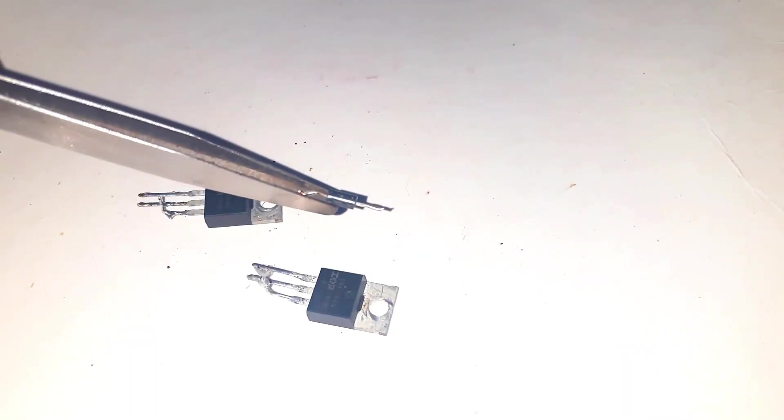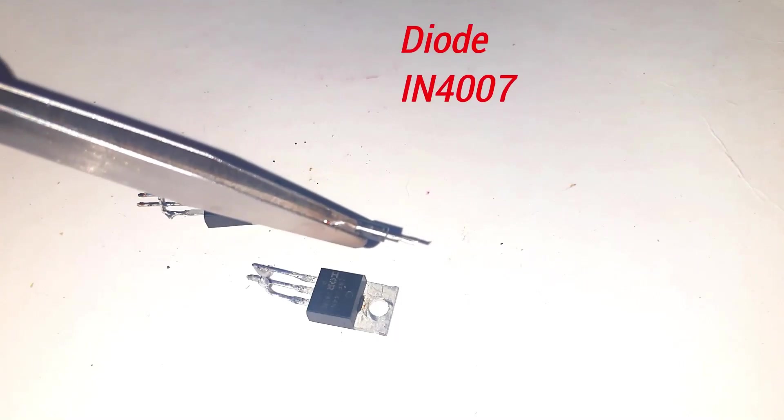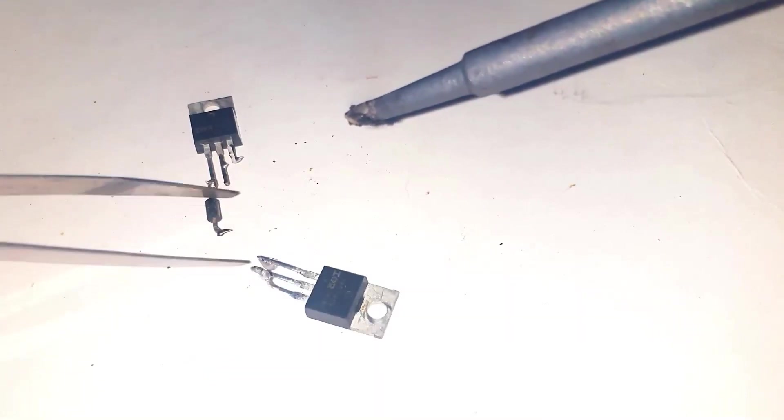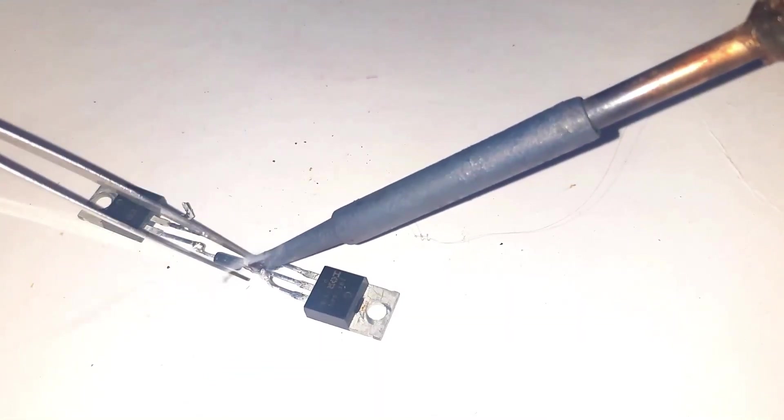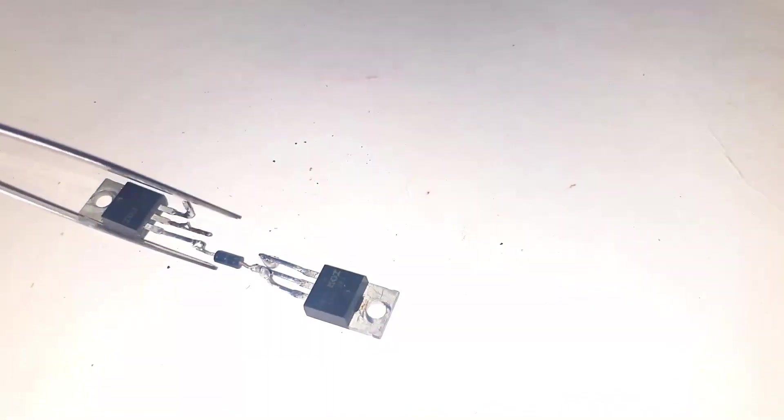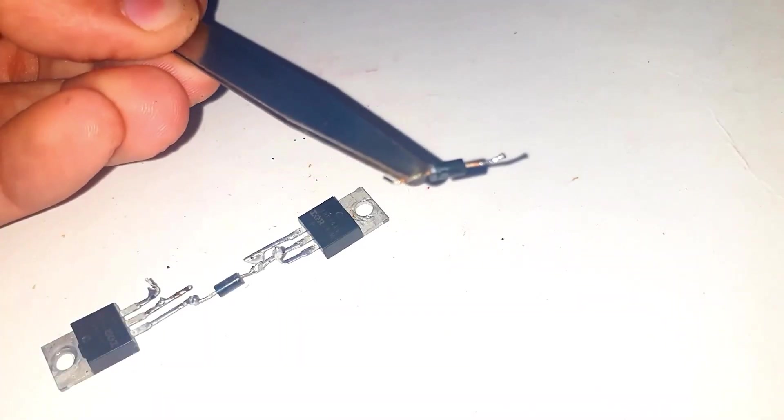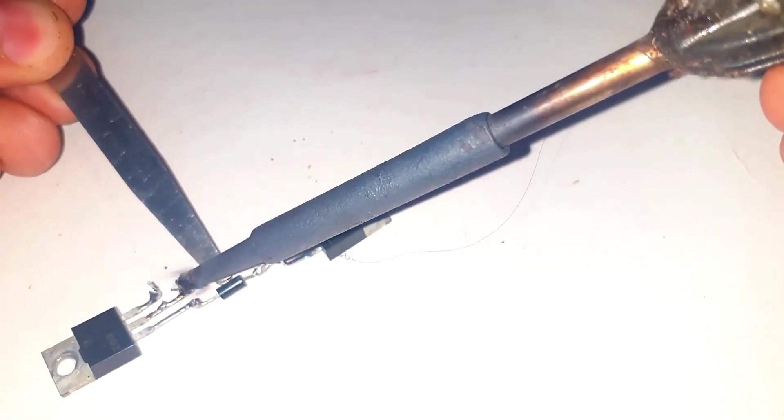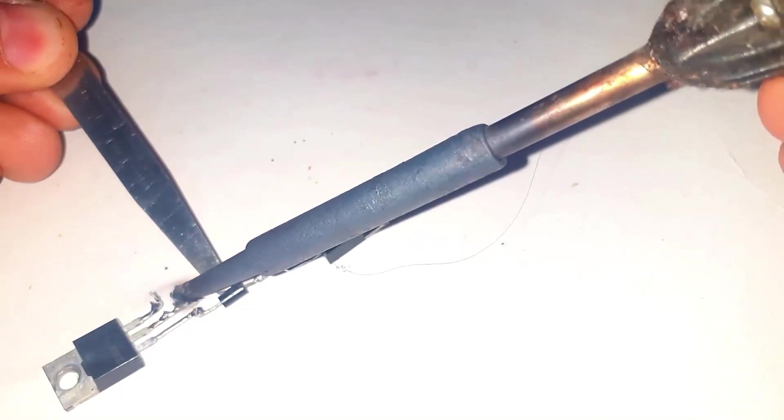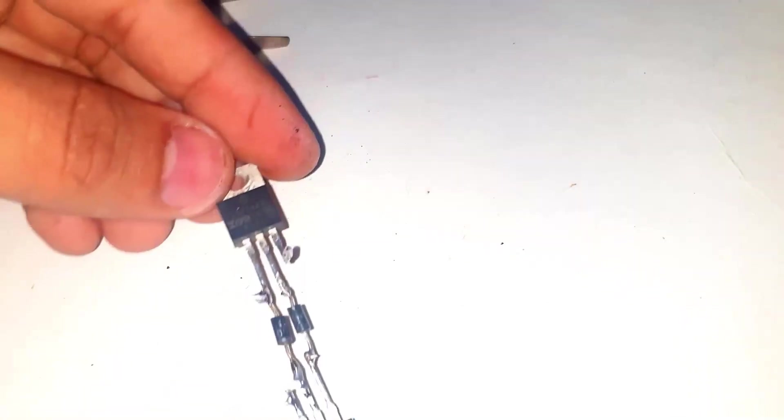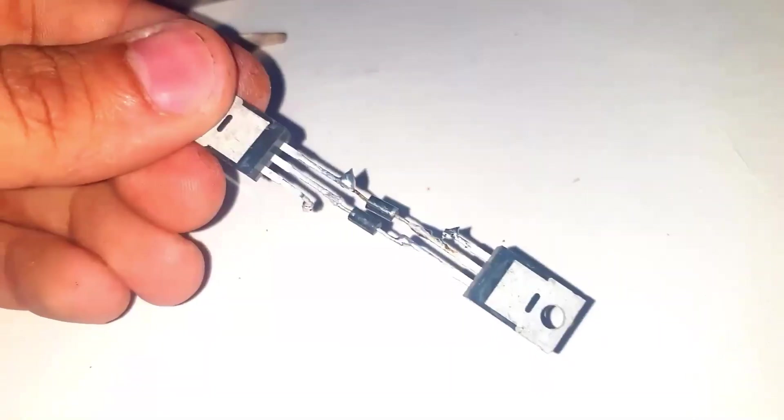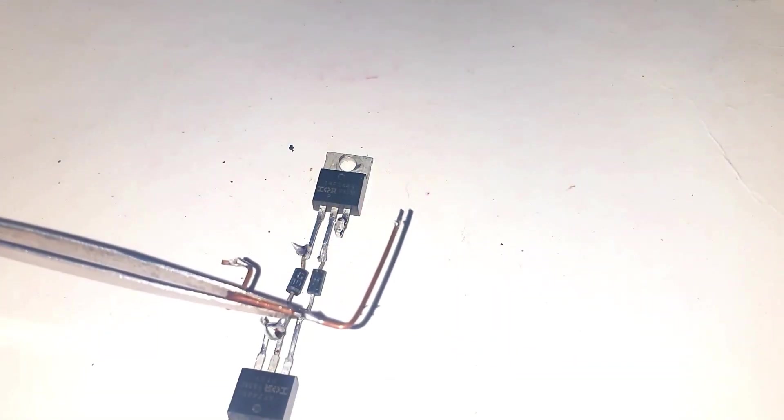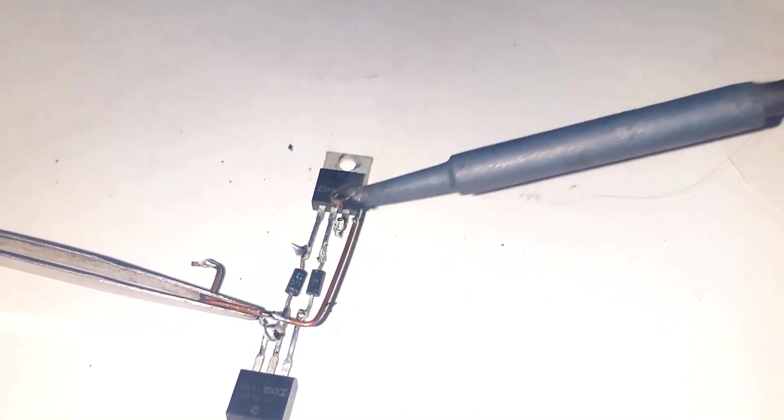This is power diode IN4007. I connect the anode terminal of this diode to the gate terminal of MOSFET and cathode terminal of diode to drain terminal of the next MOSFET. And again I connect anode terminal and cathode terminal in a similar manner to the next MOSFET. After all, my circuit looks pretty good.